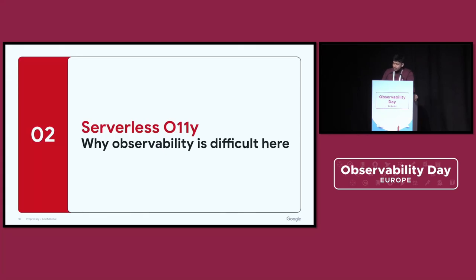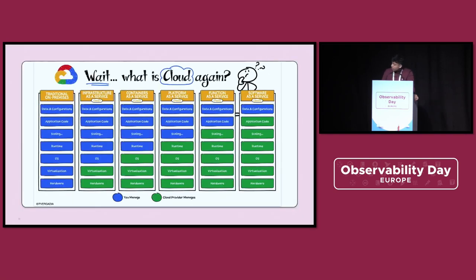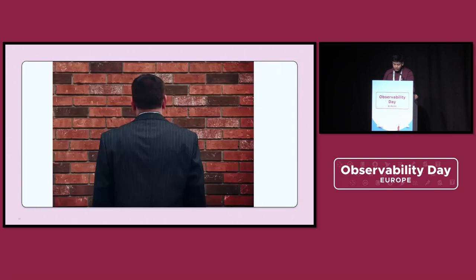Now let's talk about why observability is tricky when you're dealing with serverless. On the spectrum from traditional on-premise instances all the way to software-as-a-service and serverless, you trade off what you manage with what your cloud vendor manages for you. On one end you manage everything, from hardware to the operating system. On the other end, you only manage the configuration and some application code. But if your vendor abstracts away the infrastructure you want to observe, what does observability mean in this environment? Sometimes it feels like you're flying blind without access to custom telemetry you're used to in other runtimes.